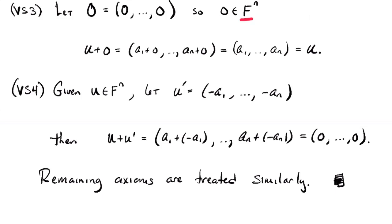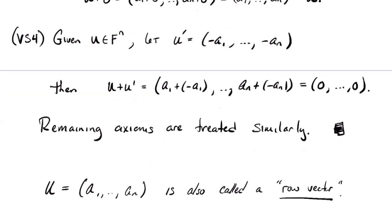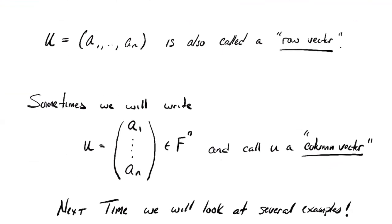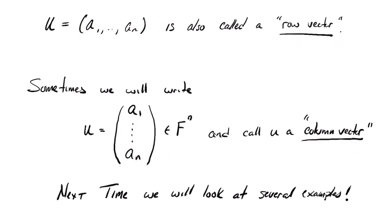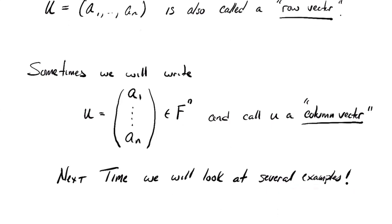This is our guiding example of a vector space. One more notation comment: when we write elements of F^N in a single line, they're sometimes called row vectors because we keep the entries in a row. Occasionally we'll switch notation and write the vector with entries in a single column with N rows — that's called a column vector. Rows are organized horizontally; columns are organized vertically. We'll see examples of when we want to use each. So that's going to be it for this time — I'm keeping this video short. Next time, we're going to look at many examples of vector spaces. Thanks for listening.